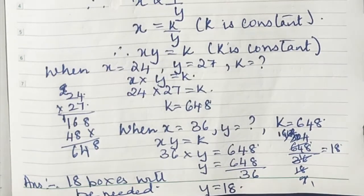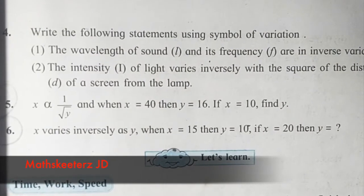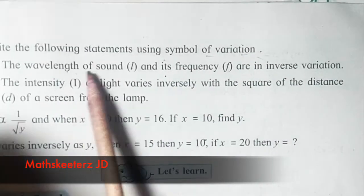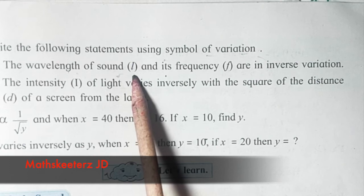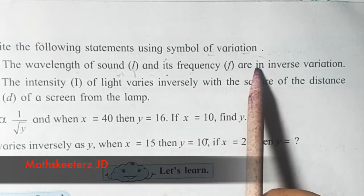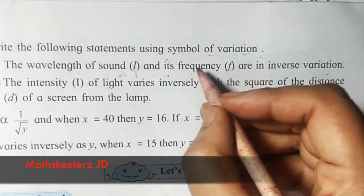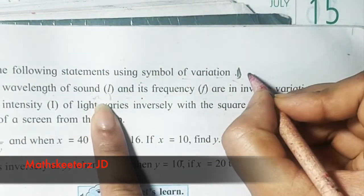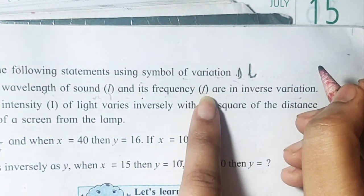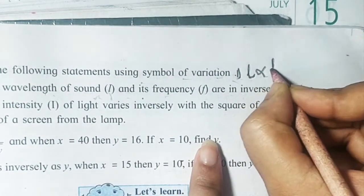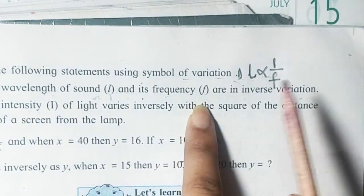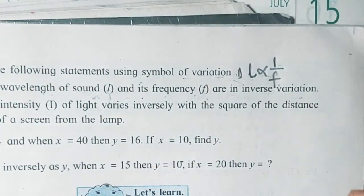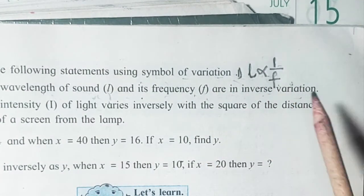Now sum number 4 — we'll do it directly from the textbook. Write the following statements using symbols of variation. The wavelength l of a sound and its frequency f are in inverse variation. So l is inversely proportional to f, meaning l is proportional to one upon f.